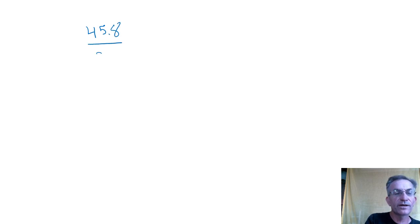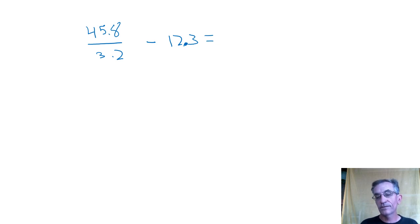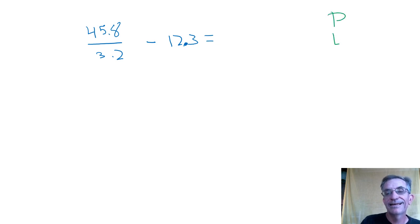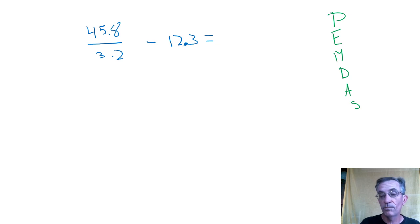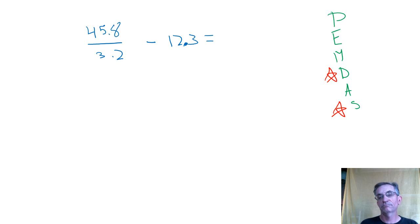Let's try another one. Let's say I wanted to do this problem: 45.8 divided by 3.2, and then subtract 12.3. First thing I'm going to do is the math in the right order. Following PEMDAS — there's nothing in parentheses, no exponents, no multiplying, but there is dividing, and then there's subtracting. So I divide first: 45.8 divided by 3.2.